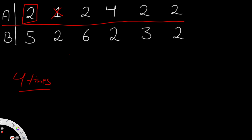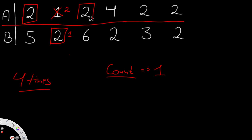We go to the same index in B, and there we actually have the value 2. That tells us that once we make a swap, we can achieve all 2s. So we assume we make a swap — 2 comes to A and 1 goes to B — and we track that with a count variable, which keeps track of how many swaps we make. Count is now 1. Then we check the next domino: 2 already exists in A, so no swap needed.